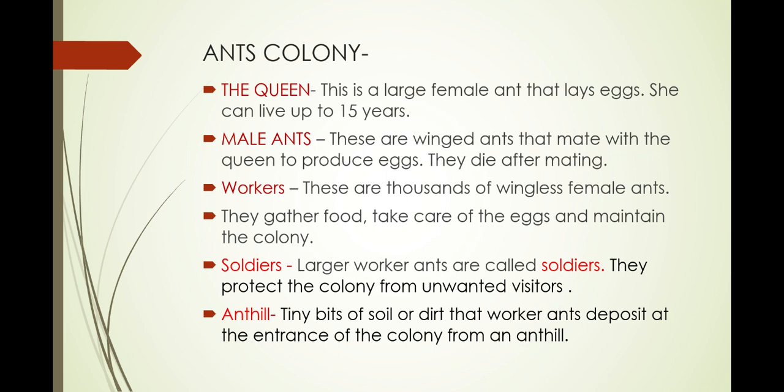The queen is the big boss of the colony — a large female ant that lays eggs. Second are the male ants. These are winged ants that mate with the queen ants to produce eggs.